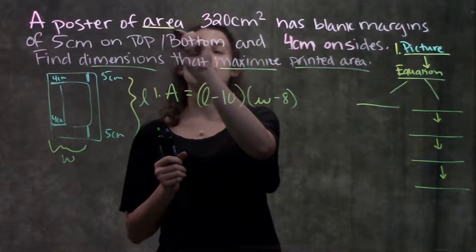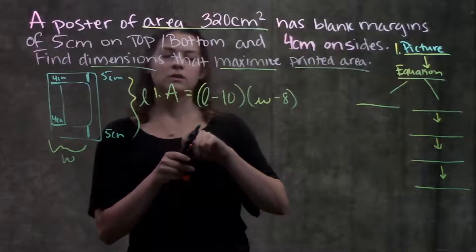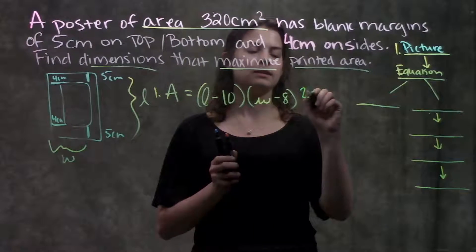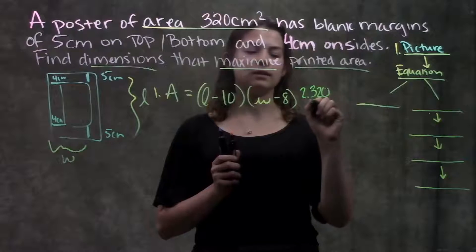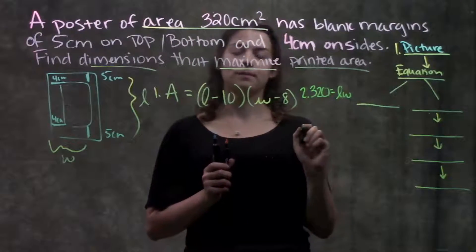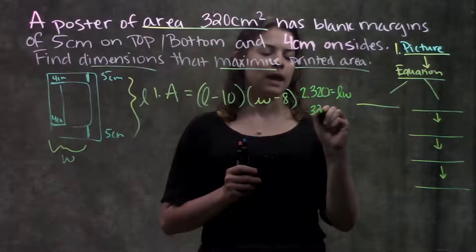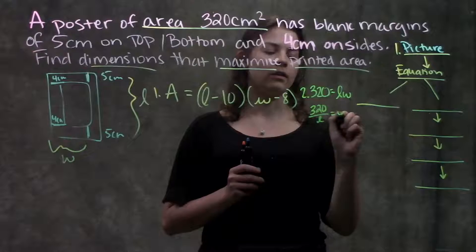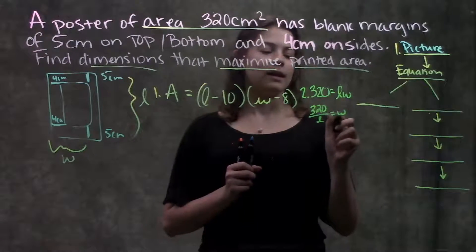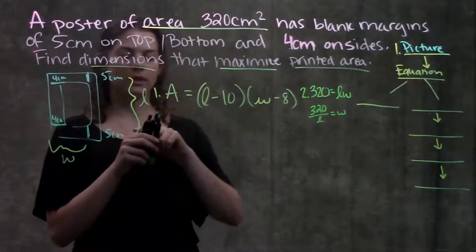So let's see what other information they told me. Well, they told me that the area of the entire thing is 320 cm². So I can write that as my second equation and say that 320 cm² is equal to the entire length times width. From here, I can just solve for one of my variables. Let's solve for W. And I have 320 over L is equal to W.